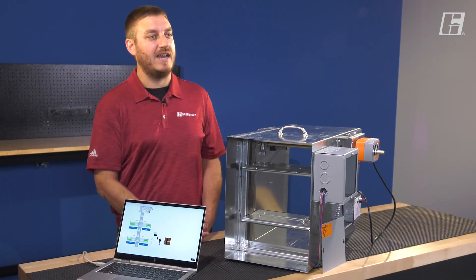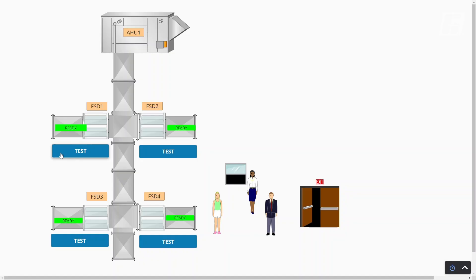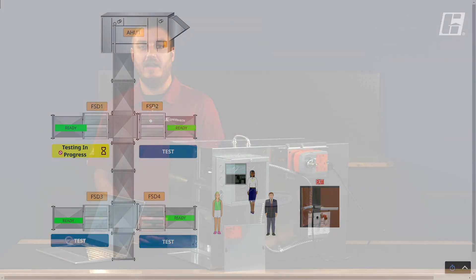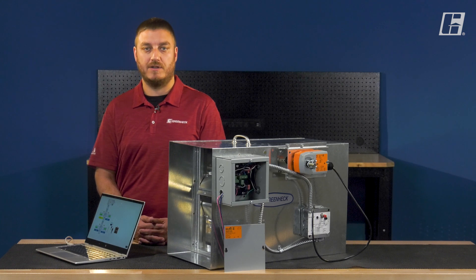Upon the command to test, the FSKN initiates damper cycling and verifies the fully closed and fully open position of the damper. A pass or fail indication message is then stored and available for reference.